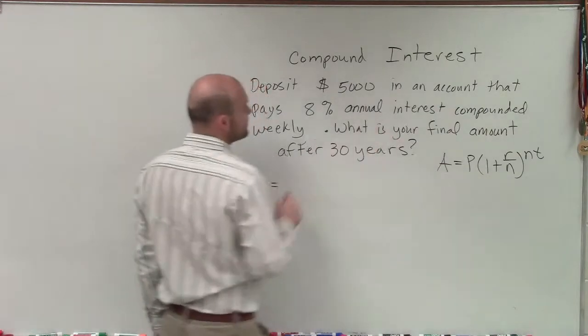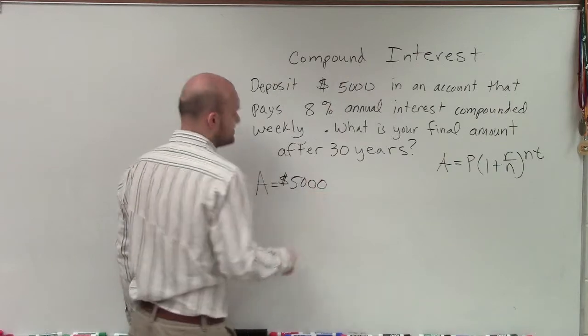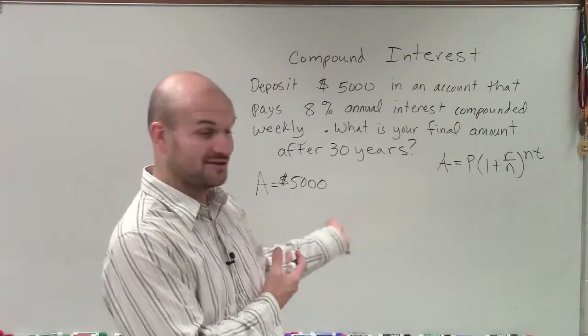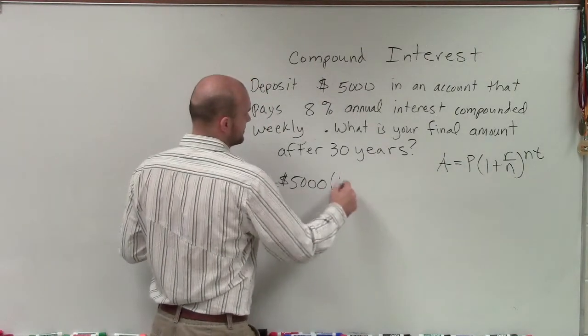We have P, which is going to be our initial investment, or what we call our principal, which is $5,000. So what that means, if you go to an account, or go to put your money in an account that has this description, this is what you can expect. You put $5,000 into them.